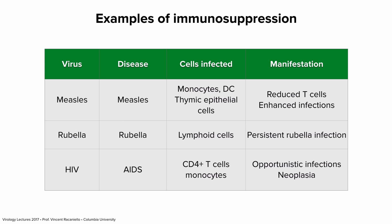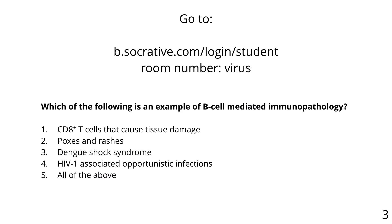Last question for today: which of the following is an example of B-cell mediated immunopathology? CD8 T cells that cause tissue damage? Poxes and rashes? Dengue shock syndrome? HIV-associated opportunistic infections? Or all of the above? The answer is dengue — that's B-cell (antibody) mediated immunopathology. CD8 T cells are not B cells. Poxes and rashes are T-cell mediated. All of the above is not right.